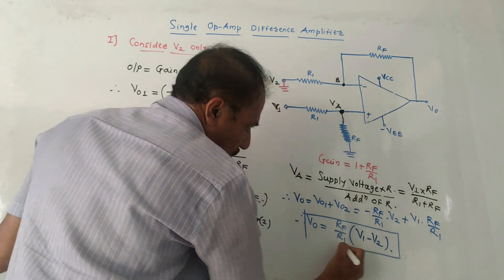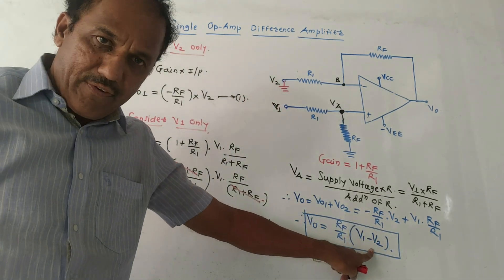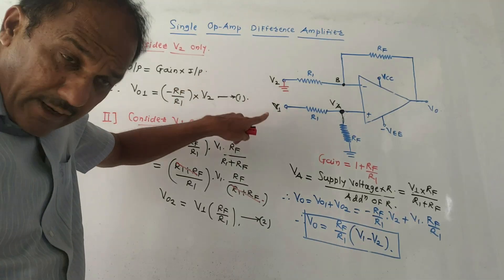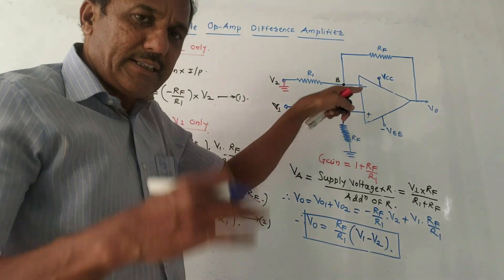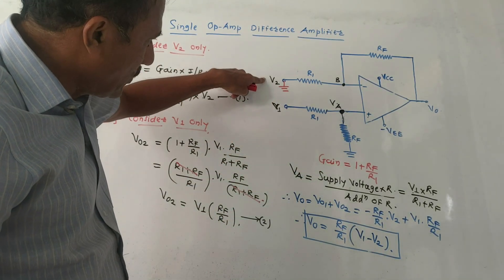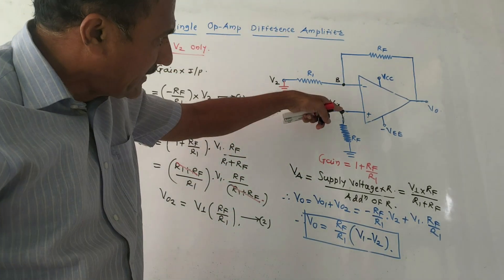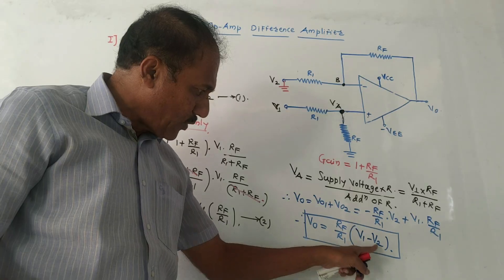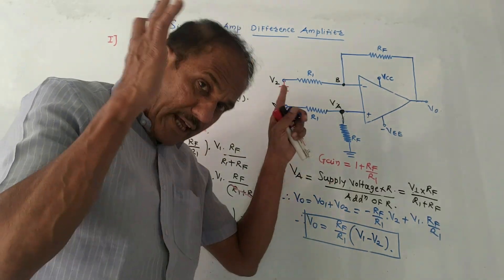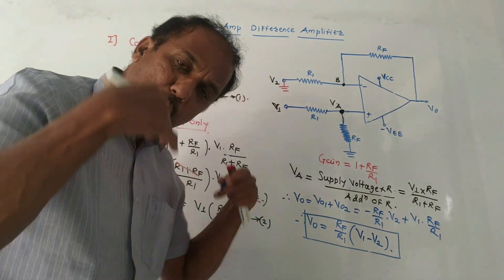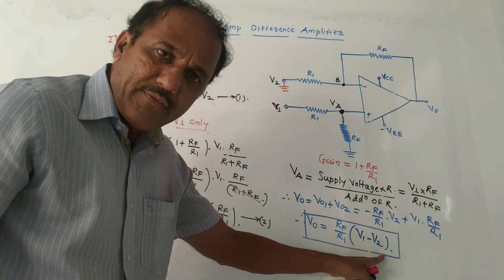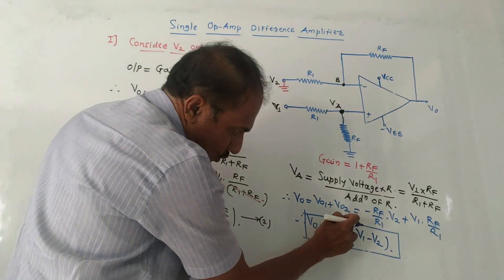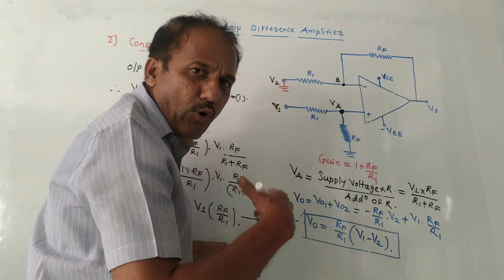This is the equation of output voltage for the difference amplifier. It indicates that V1 − V2 is the difference between the two voltages, where V1 is the voltage applied at the positive (non-inverting) terminal and V2 is the voltage applied at the negative (inverting) terminal. The output is proportional to the difference V1 − V2, multiplied by Rf/R1. By choosing proper values of Rf and R1, we can adjust the output voltage.